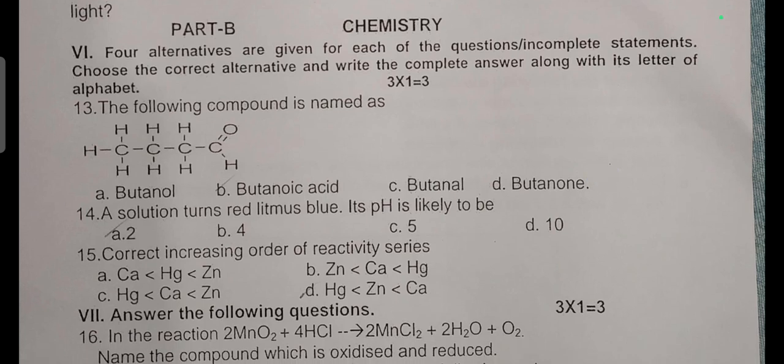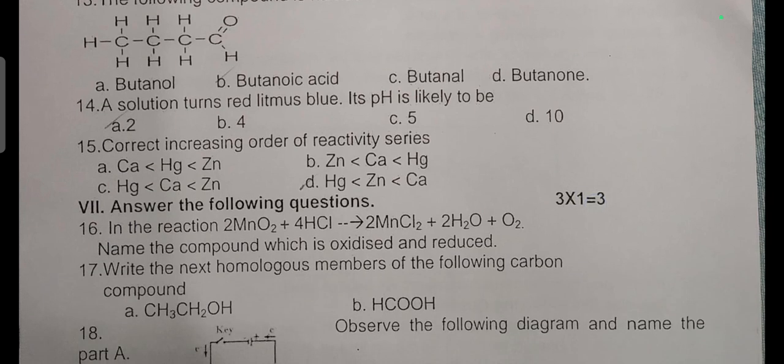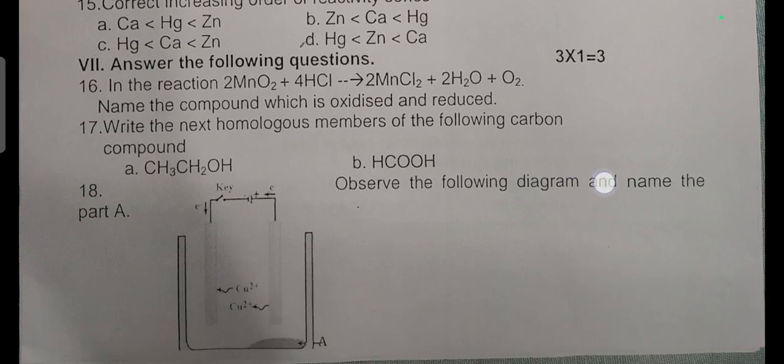Part B: Chemistry. Three multiple choice questions. The following compound is named as: answer is butanone. A solution turns red litmus to blue, its pH is likely to be. The correct increasing order of reactivity series is. Answer the following questions. In the reaction 2MnO2 + 4HCl → 2MnCl2 + 2H2O + O2, name the compound which is oxidized and reduced. Write the next homologous member of the following carbon compound: CH3CH2OH and HCOOH.